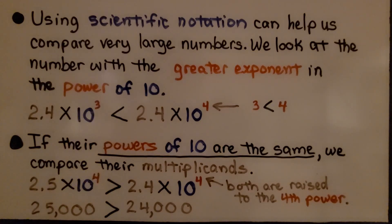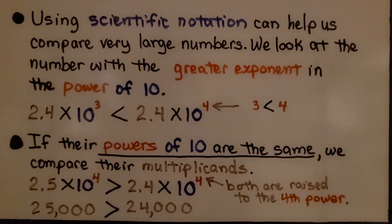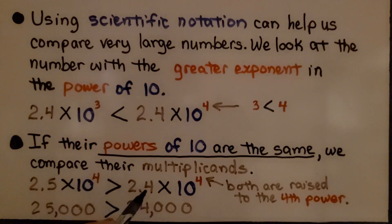If their powers of 10 are the same, we compare their multiplicands. We have 2.5 times 10 to the fourth power and 2.4 times 10 to the fourth power. Both are raised to the fourth power, so we compare the multiplicands: 2.5 and 2.4. This is 25,000 and this is 24,000. We know 2.5 is greater than 2.4, so that is the greater number.